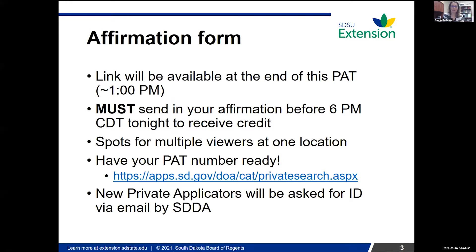That affirmation form has spots to include other people at your location. The affirmation form can hold three people. If you have more than three at your location, there are instructions on the affirmation form about how to email that information. It really helps us when you fill out that affirmation form completely and accurately. It will ask you for your private applicator number. If you don't have your card handy, you can look up your private applicator number at the Department of Ag link. You can also look at your barcode — it is the number immediately under the barcode, the first seven digits. It helps us when you give us your full name, middle initial, the mailing address where you want your card sent, your county, and your email address. Your affirmation form receipt will be emailed to you, so it is imperative that you put in a valid email address.